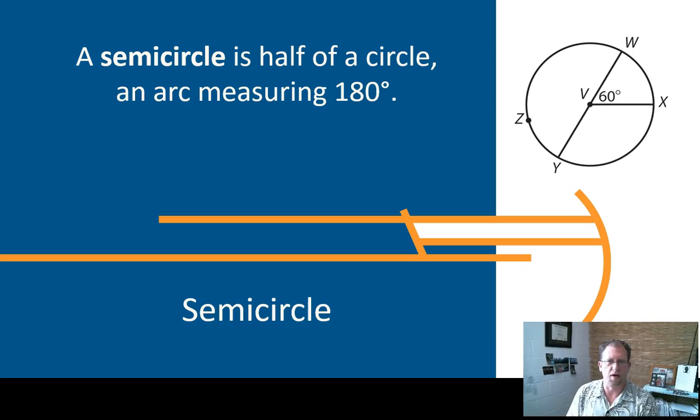A couple of quick terms here for you. A semicircle, semi means half. So a semicircle is half of a circle. A whole circle is 360 degrees. The semicircle is 180 degrees. Pretty simple idea.